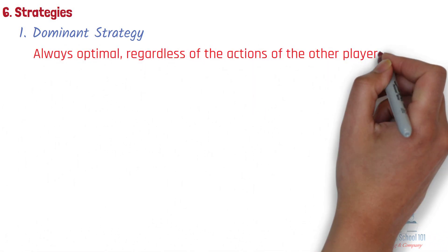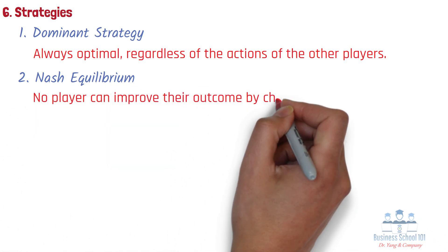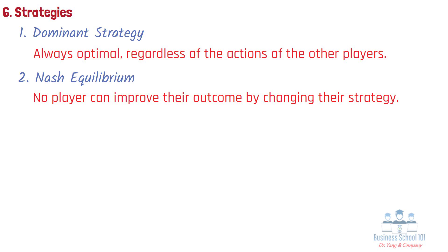Here are some of the major strategies used in game theory. First, dominance strategy: a dominant strategy is a strategy that is always optimal regardless of the actions of the other players — it is the best strategy to choose no matter what the other players do. Second, Nash equilibrium: a situation where no player can improve their outcome by changing their strategy, given the other players' strategies. It is a stable outcome where all players are making the best decision given the actions of the other players.